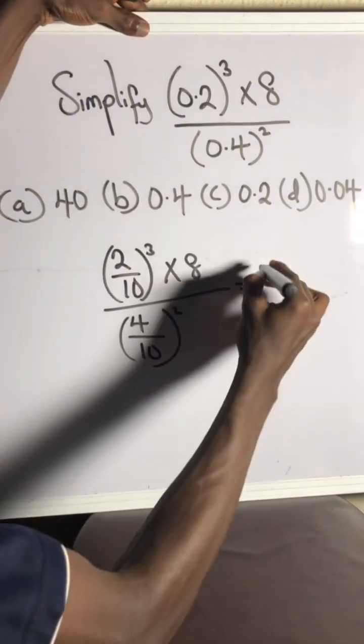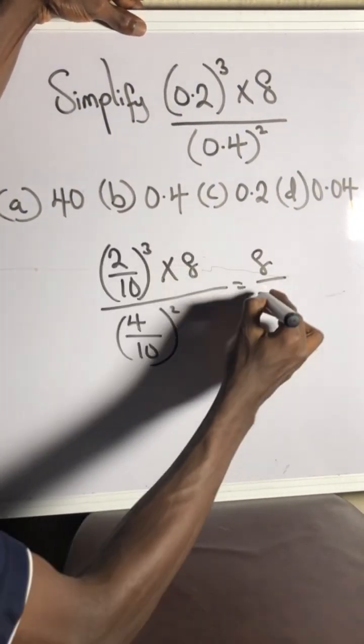Now listen up, this gives you 2 cubed is actually 8 over 10 cubed is 1000.